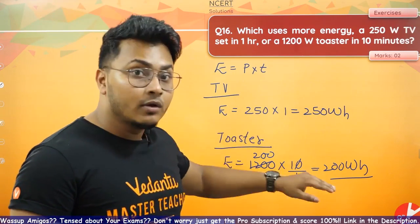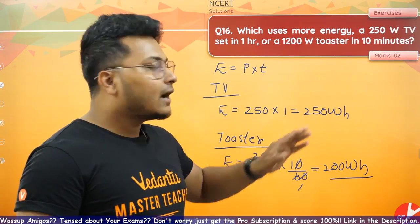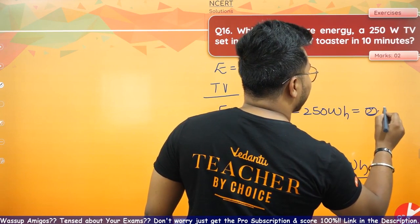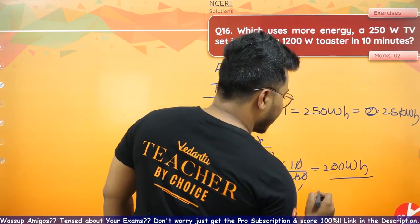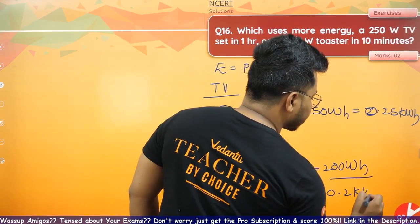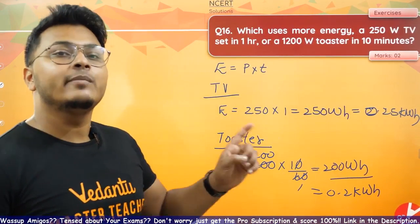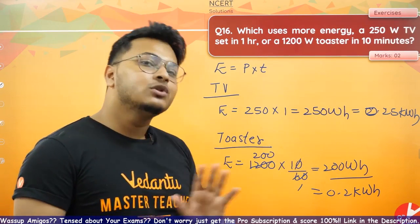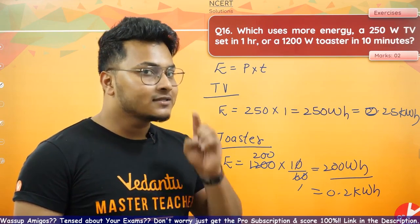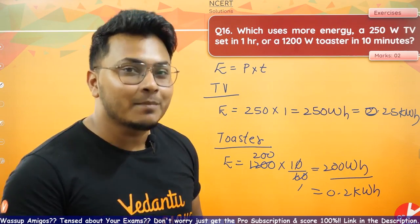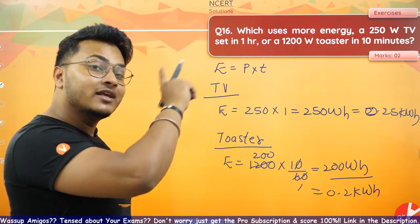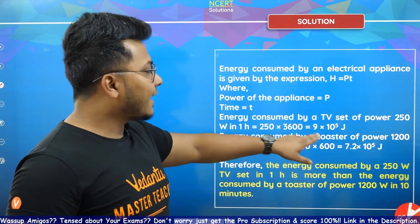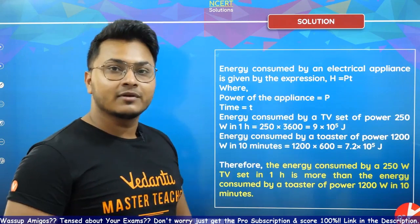For the TV: energy = 250 watts × 1 hour = 0.25 kilowatt-hours. For the toaster: energy = 200 watts × 10 minutes = 200 watts × (1/6) hour = 0.2/6... which gives 0.2 kilowatt-hours for the toaster in 10 minutes. Converting to joules using 1 kWh = 3.6 × 10⁶ joules: TV gives 9 × 10⁵ joules, toaster gives 7.2 × 10⁵ joules. So the TV uses more energy.